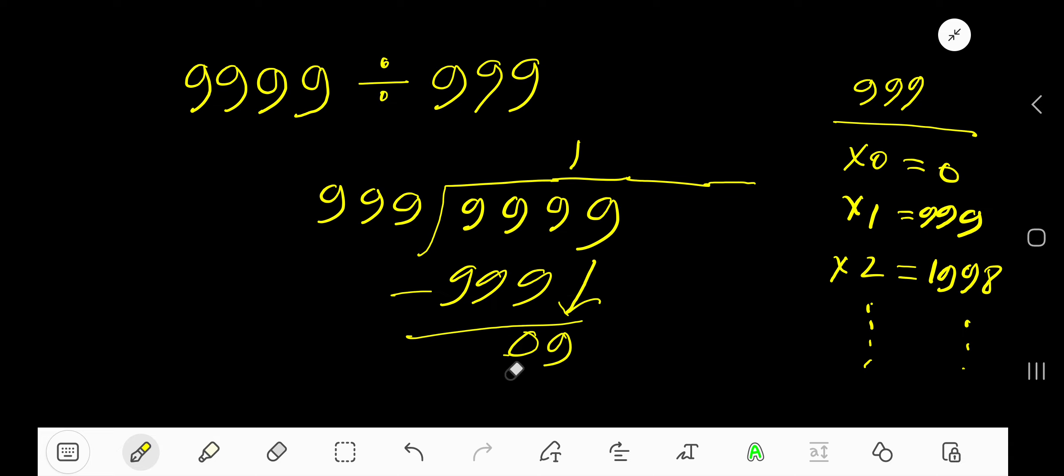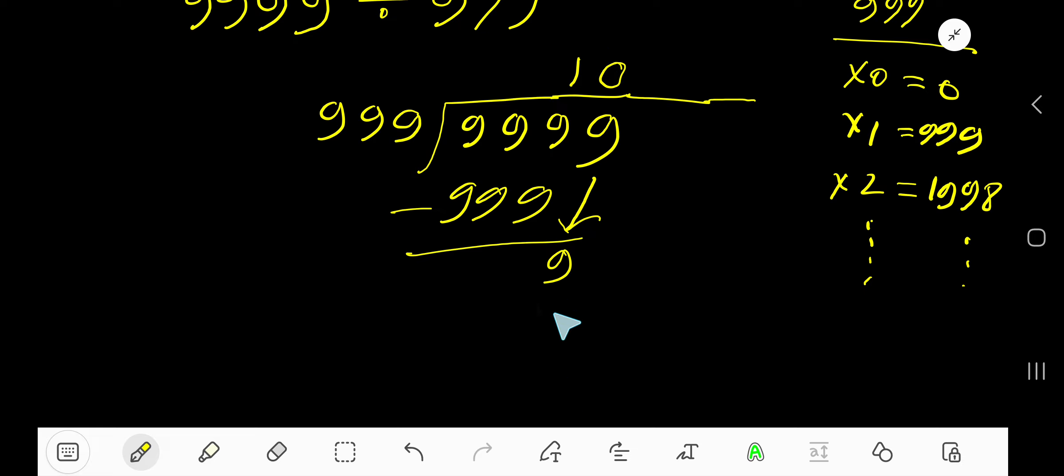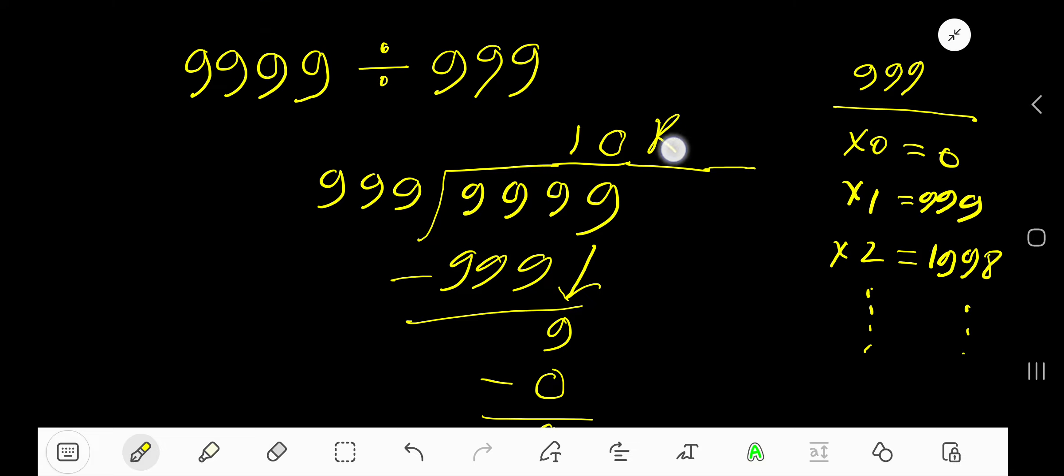0 9 means 999 goes into 9 how many times? 0 times, as 9 is less than this. 0 times 999, 0 subtract 9, so your remainder is 9. So 10 remainder 9 is your answer.